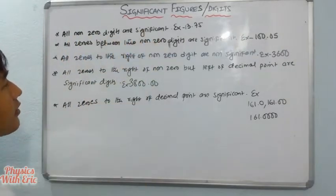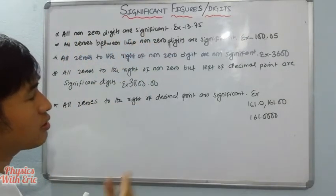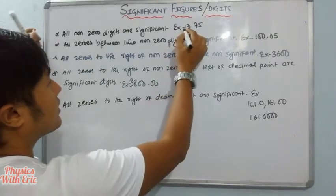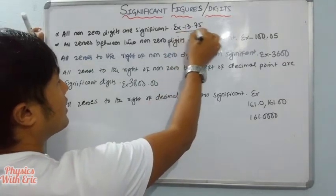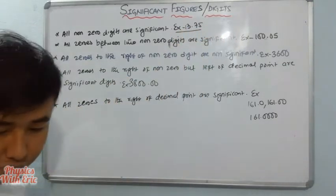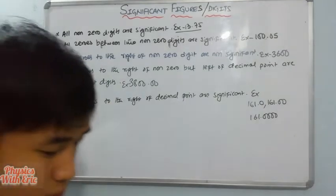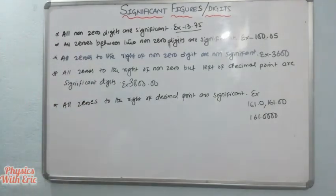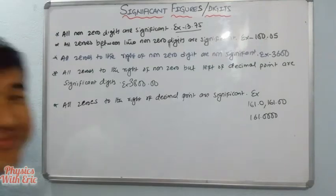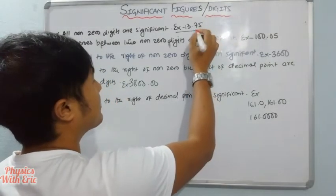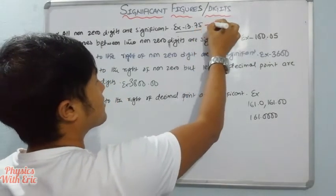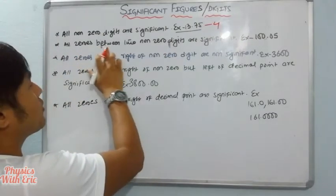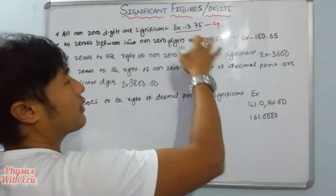It seems like a number is not really significant unless it meets the rules. So the number is significant. All zeros between two non-zero digits are significant.